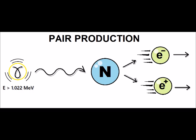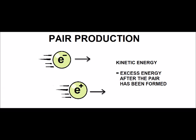These particles tend to travel in the forward direction, and the gamma ray photon energy in excess of 1.022 mega electron volts appears as the kinetic energy of these two particles.